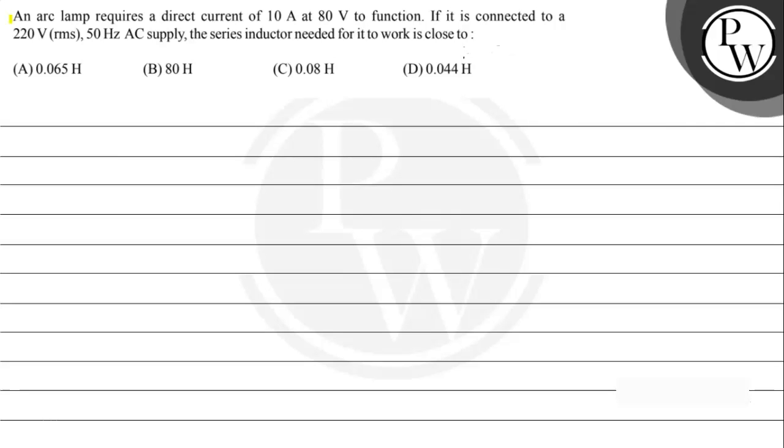Hello, let's read the given question. The question says an arc lamp requires a direct current of 10 ampere at 80 volt to function. If it is connected to a 220 volt RMS having 50 hertz frequency AC supply, the series inductor needed for it to work is close to: option A, 0.065 henry; option B, 80 henry; option C, 0.08 henry; option D, 0.044 henry.